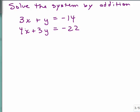If you're looking at the x terms, one's 3, one's 4. You could multiply the top by 4 and the bottom by negative 3 to get the least common multiple of 12. But actually it's easy to eliminate the y's here because I have a y and a 3y, so that's really a 1y in the top equation.